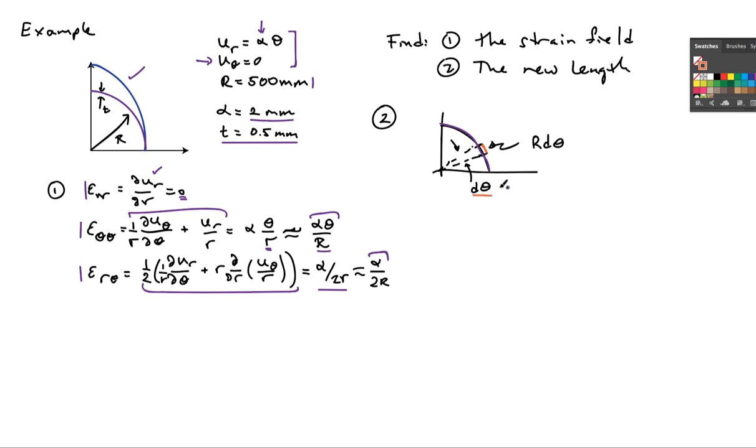So d theta we're going to consider to be small so the length of this little segment of material is r d theta. And let's consider what happens to that.